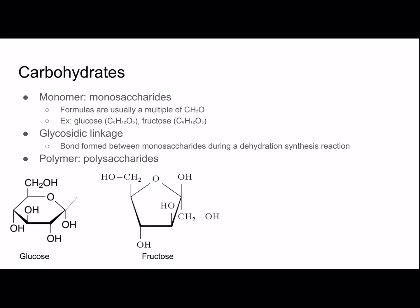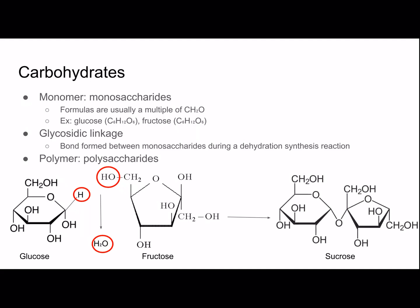I'm going to draw in a hydrogen atom — it is there, it just wasn't drawn before, because it's going to be part of the reaction. That hydrogen atom with the hydroxide group from fructose will be removed, so water is going to be removed. This will lead to the creation of sucrose, which is the two monosaccharides joined together. Sucrose is a disaccharide.